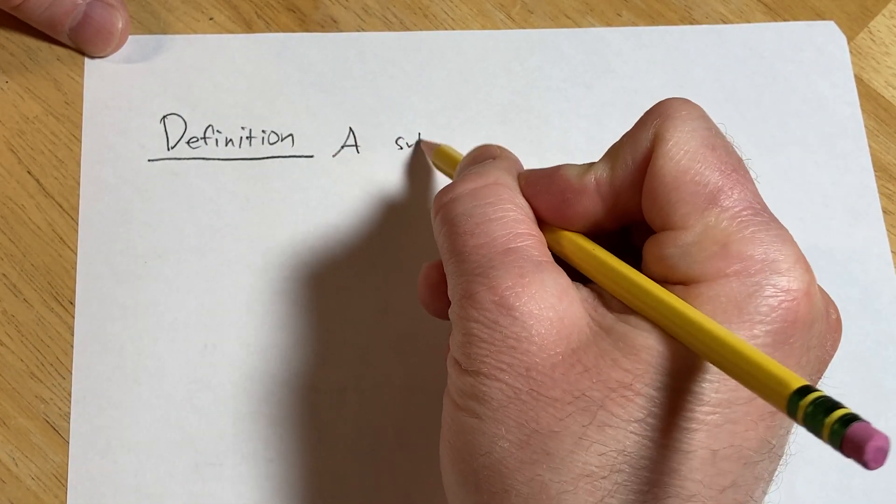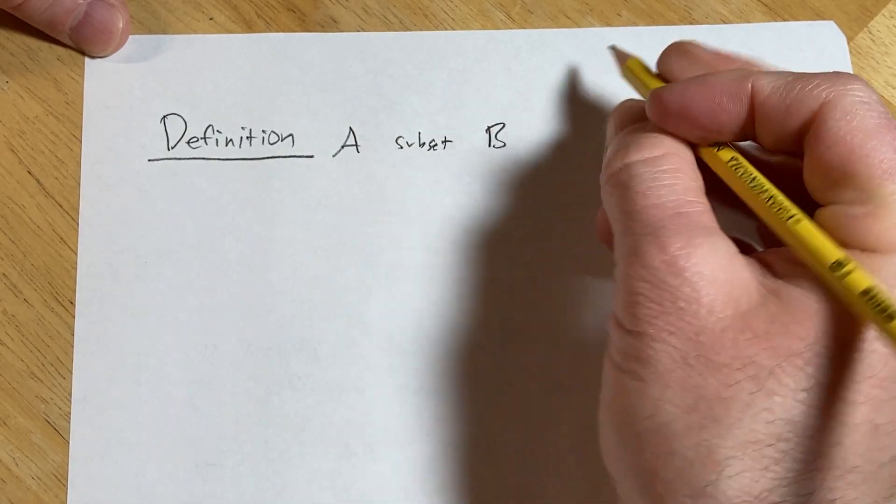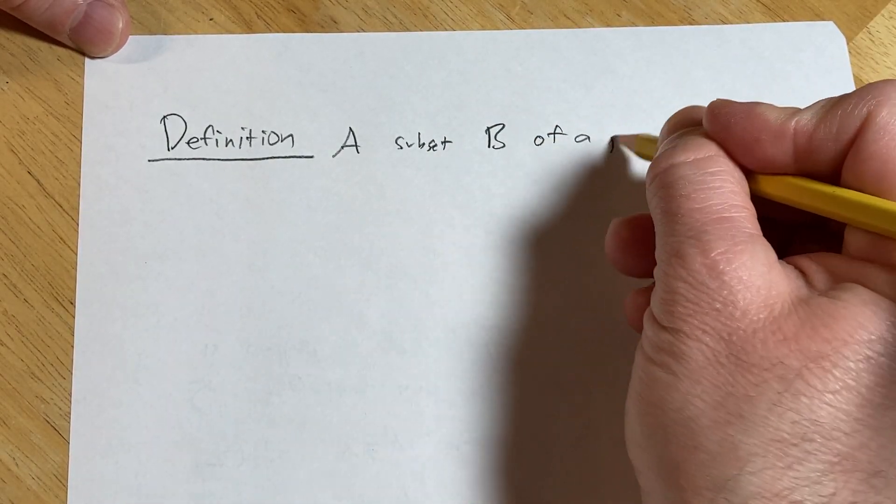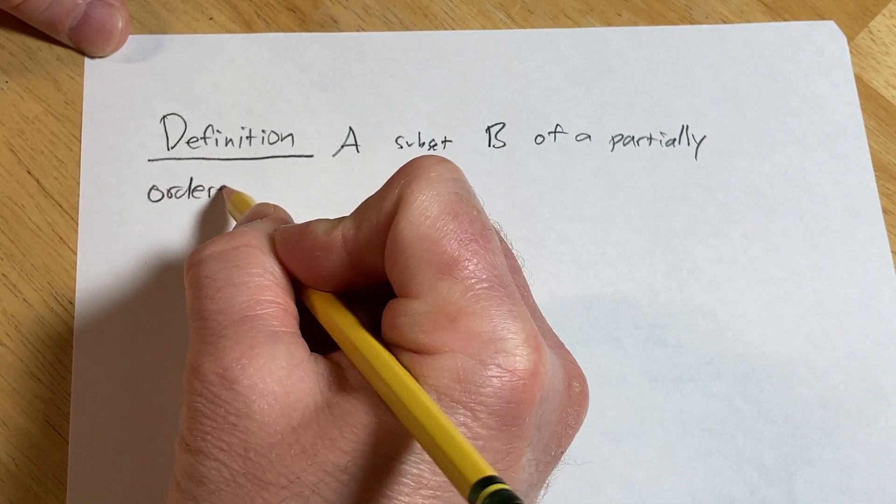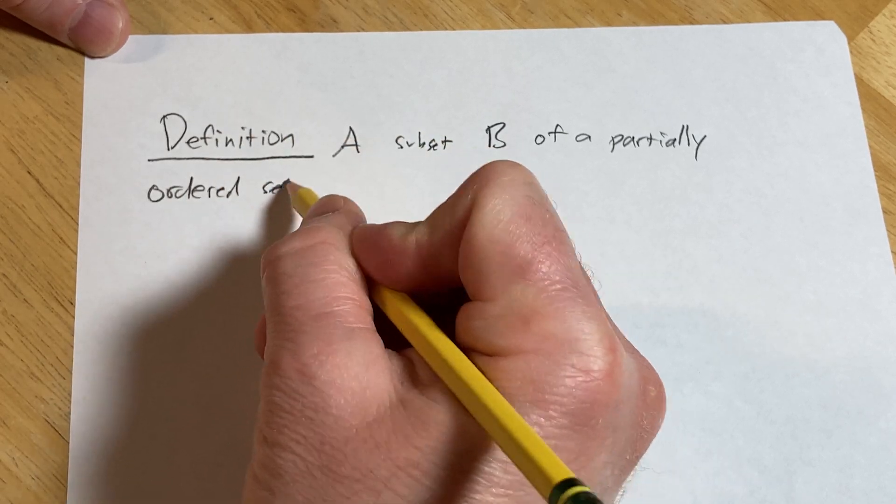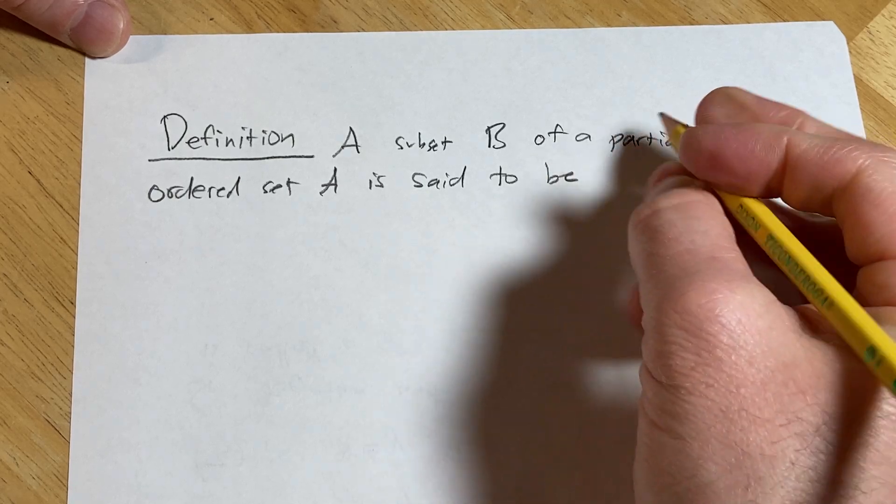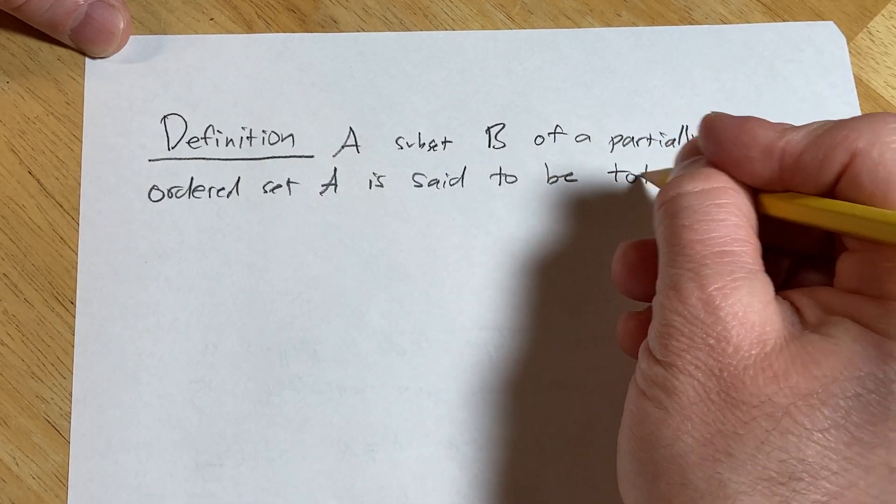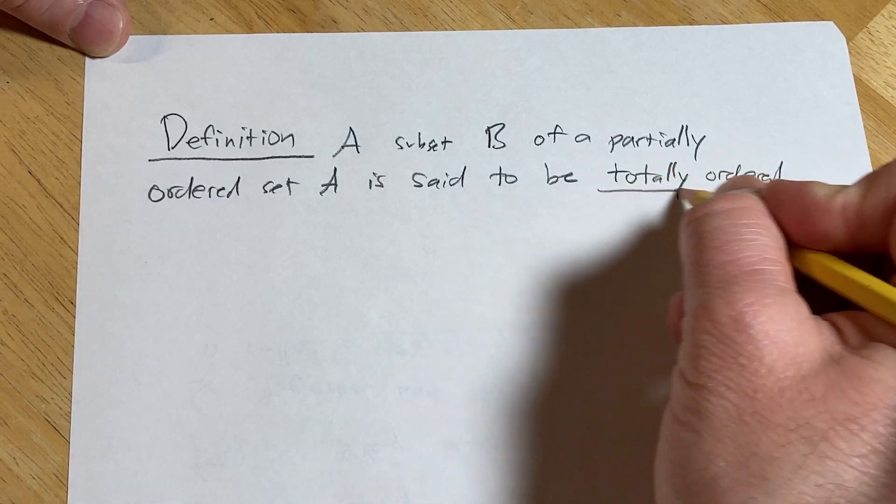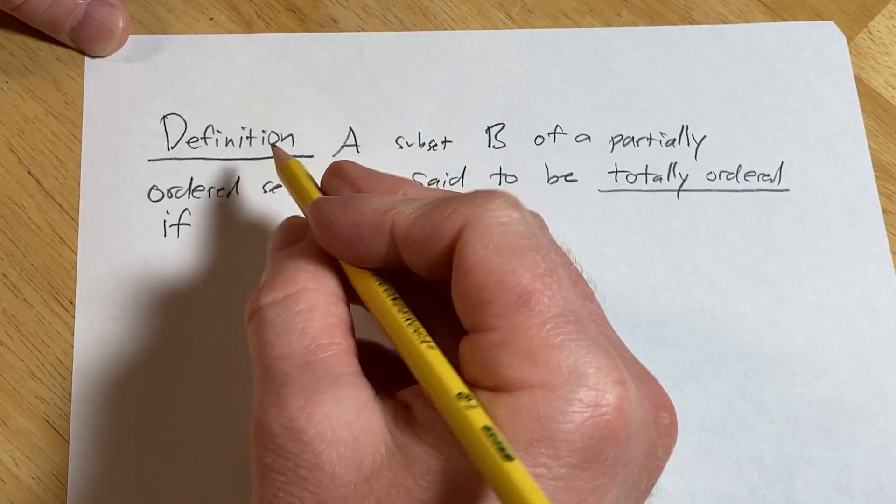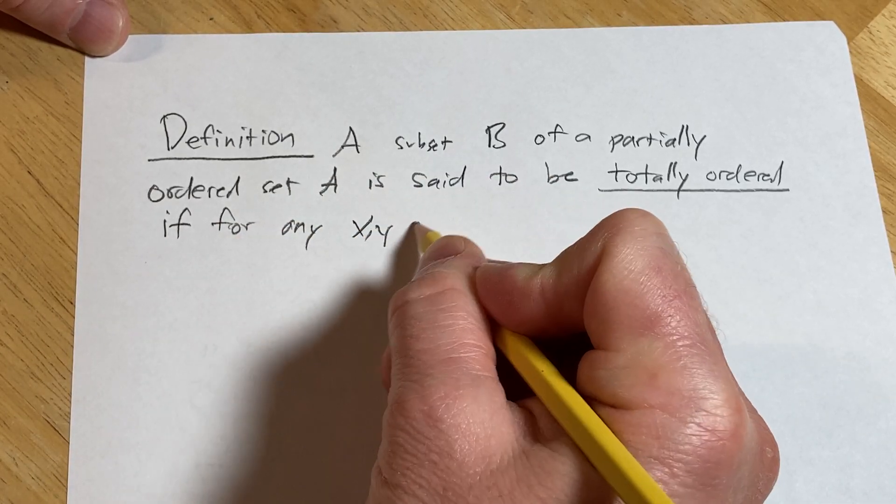A subset B of a partially ordered set A is said to be totally ordered if for any x, y, and B,